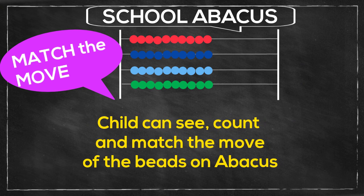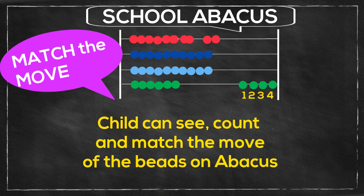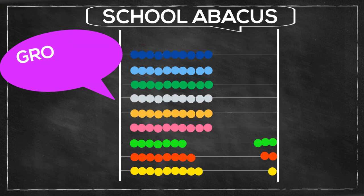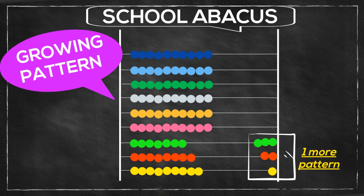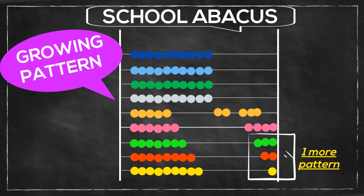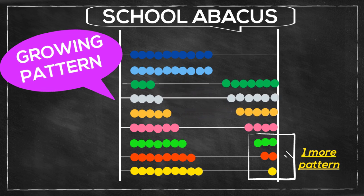For example, here we move four beads and the child needs to count one, two, three, four and move exactly four beads. We can show some patterns and the child needs to follow them. Here one more pattern is shown, so the kid will continue the same pattern. Improvise any pattern depending on the child's age and interest.